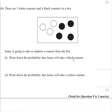Write down the probability that Jenny will take a black counter. Okay, so let's get a pen. How many black counters have we got? 4, right? So this comes up as 4.